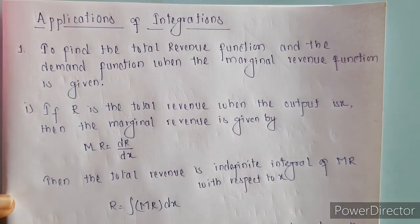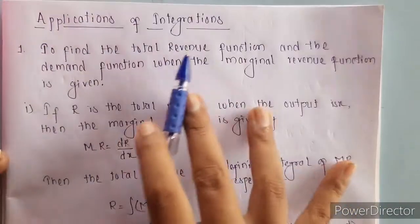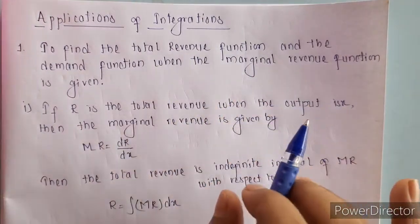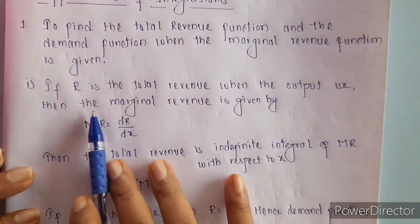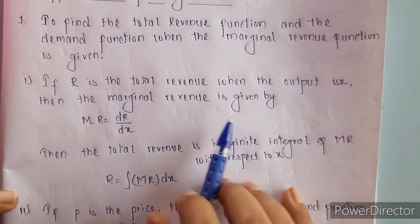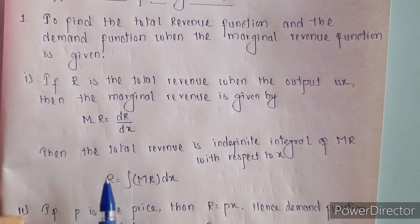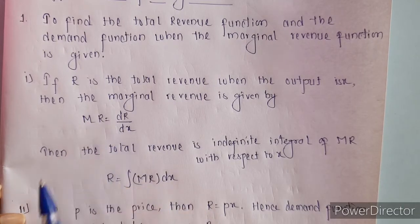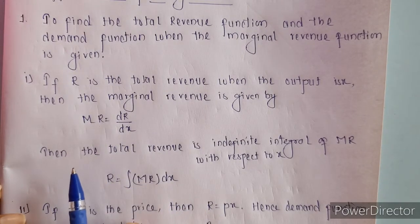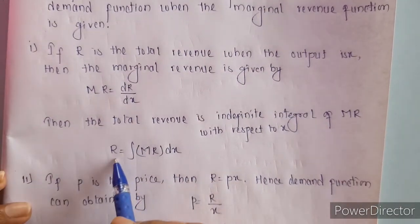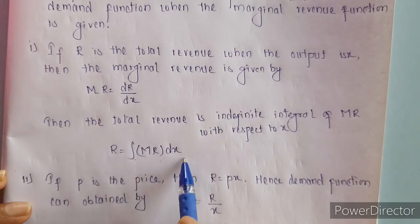Next topic is applications of integration. The first thing we will be studying is how to find the total revenue function and the demand function when the marginal revenue function is given. Suppose R is the total revenue function and X is the output. Marginal revenue is nothing but change in revenue with respect to X. From marginal revenue we find total revenue by taking integration on both sides — the integral cancels the derivative. So total revenue is nothing but the integral of marginal revenue with respect to X.